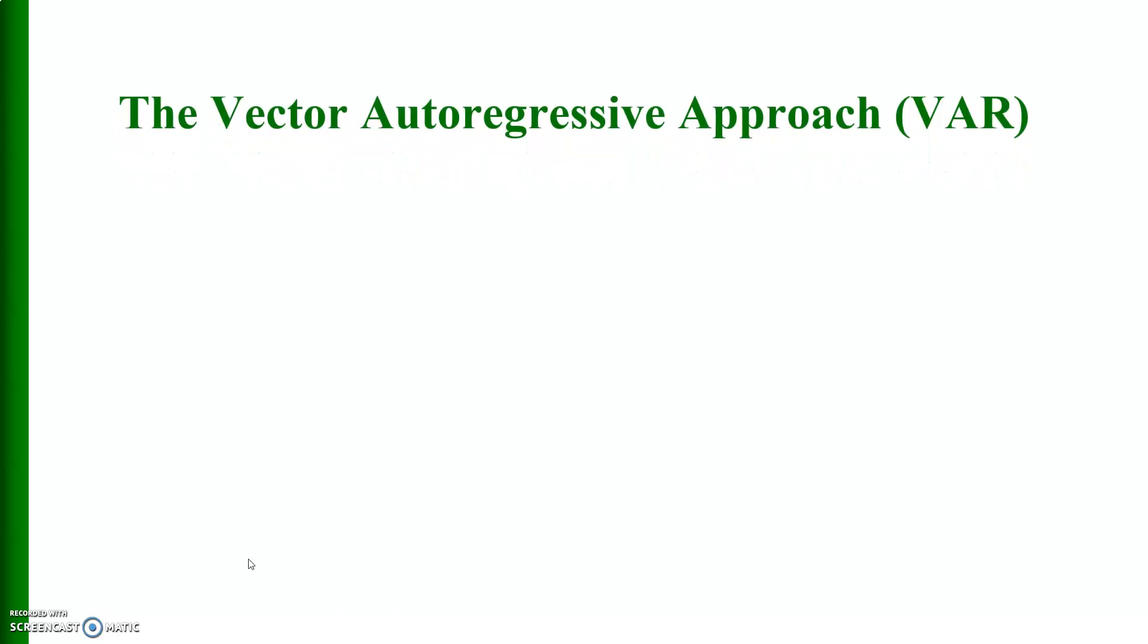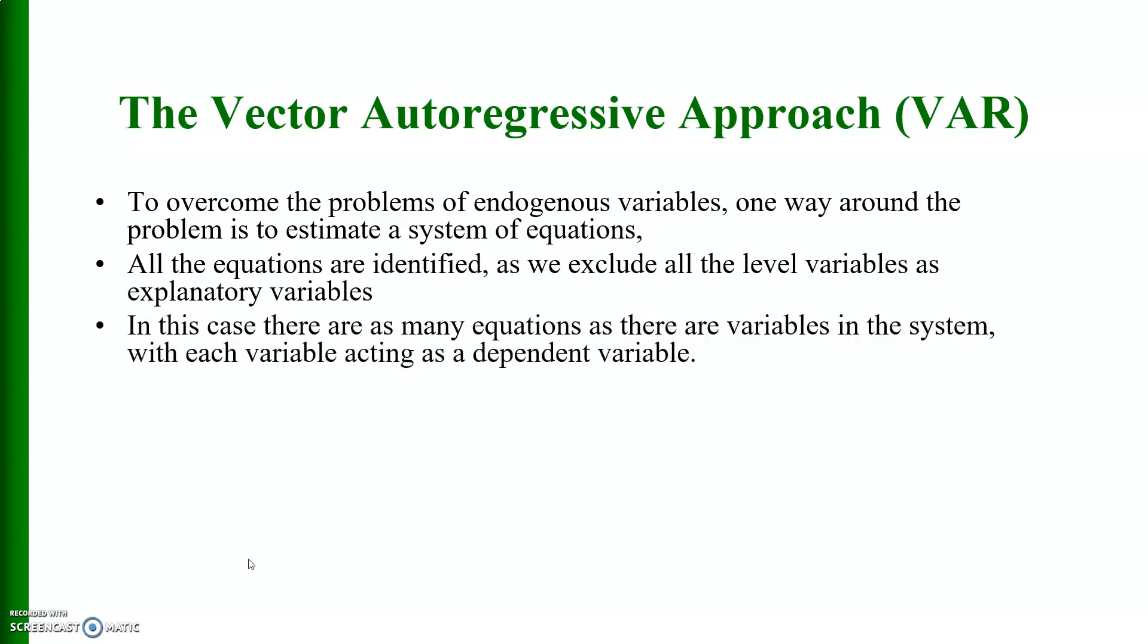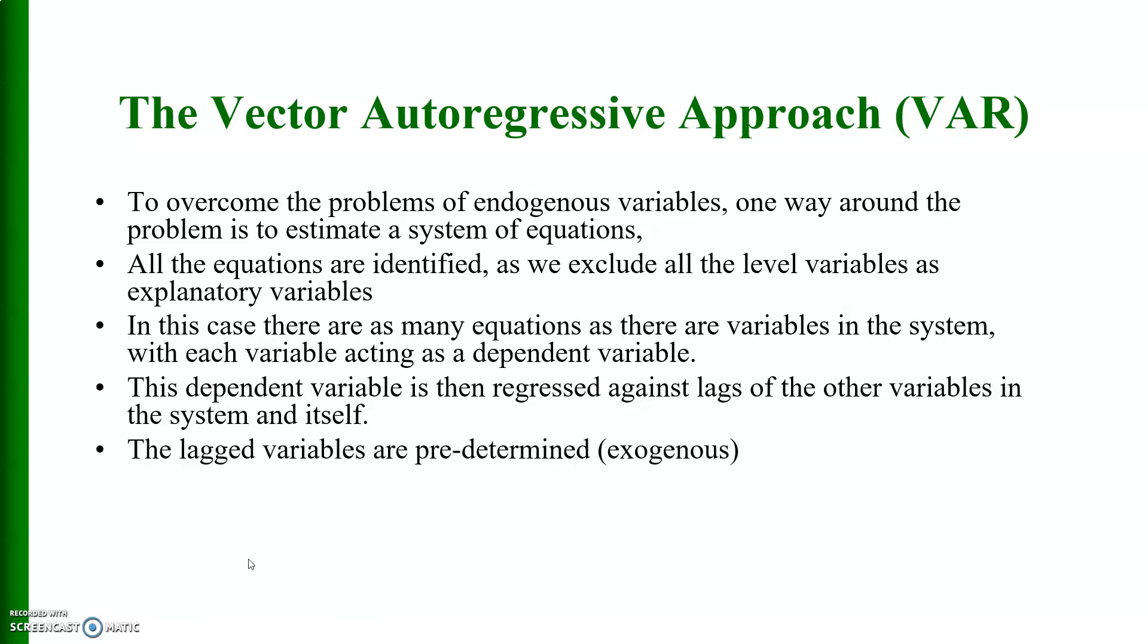Then the other approach is the VAR model, that is vector autoregressive approach. To overcome the problems of endogenous variables, one way around the problem is to estimate a system of equations. All the equations are identified as we exclude all the level variables as explanatory variables. In this case, there are as many equations as there are variables in the system with each variable acting as a dependent variable. This dependent variable is then regressed against lags of the other variables in the system and itself.